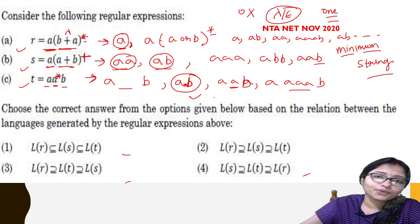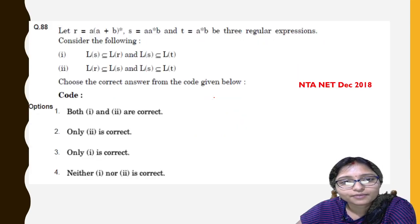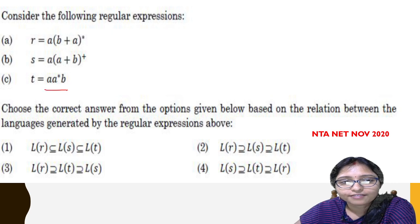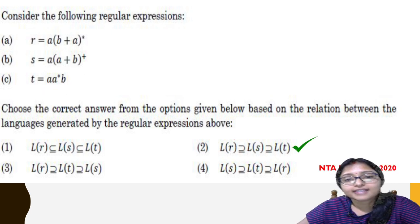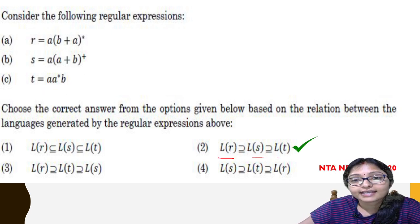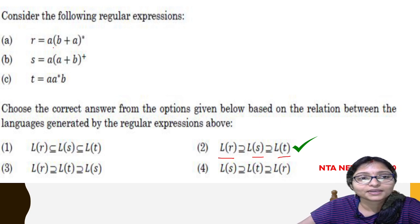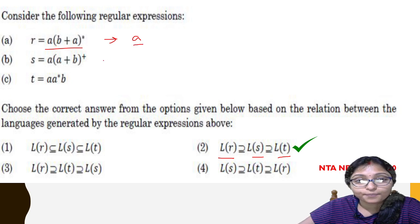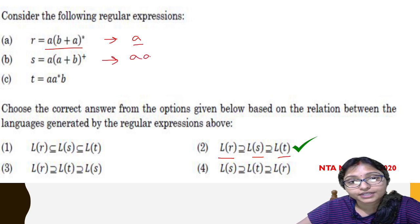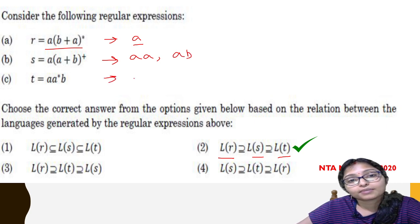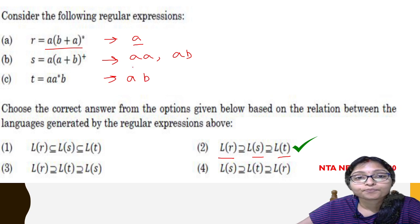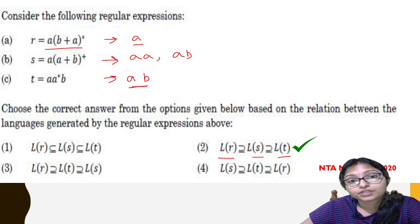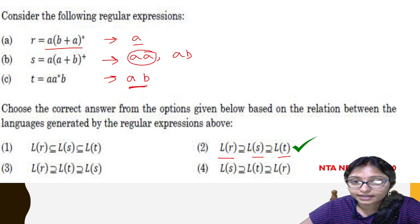Now I am going to the answer. Our result is R, S, T. How is the answer coming? From R, the minimum string is A. From S, the minimum string is either AA or AB. From T, the minimum string is AB — starting with A ending with B. But see that here AB was possible but AA was not possible in T.